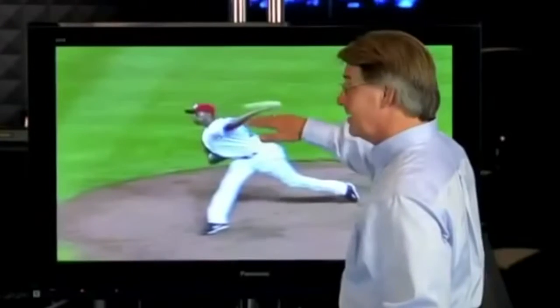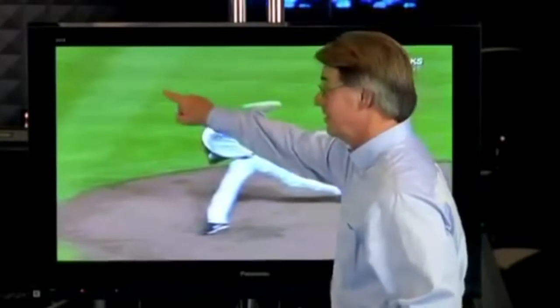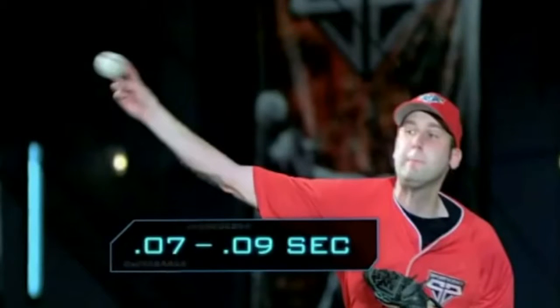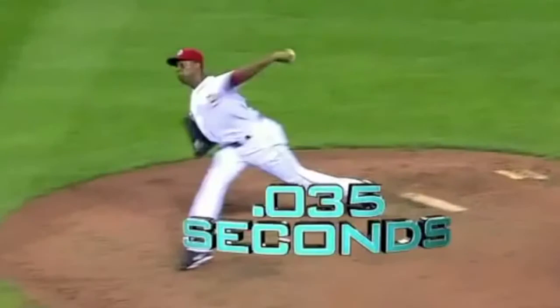Next, delivery. The thing that separates him is a lot of pitchers could get to that, but how soon does it get to here? The average pitcher uncocks his forearm in seven to nine hundredths of a second. Chapman's arm fires in less than four hundredths of a second.